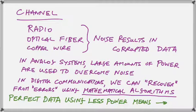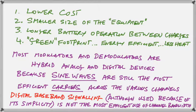Perfect data using less power means lower cost, smaller size. You know how small your cell phones are now. They were much bigger before. Longer battery life because we don't have to use up the charge so fast. A green footprint. They're more energy efficient. They generate less heat. This is why digital communication systems have become so incredibly important. But we have to also realize that we still need to know about analog because most modulators and demodulators are hybrid systems using both analog and digital technology.